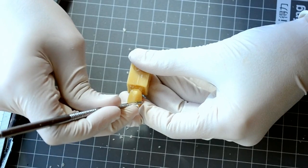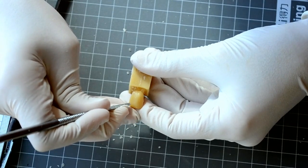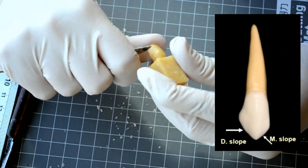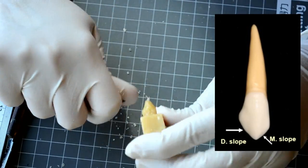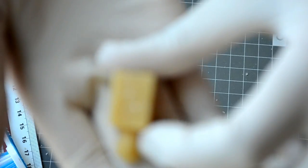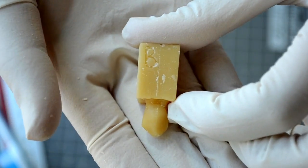After doing so, you can begin carving out the mesial and distal slopes of the labial cusp. Remember that the mesial slope of the cusp is shorter than the distal slope. This is how your final tooth should look like.